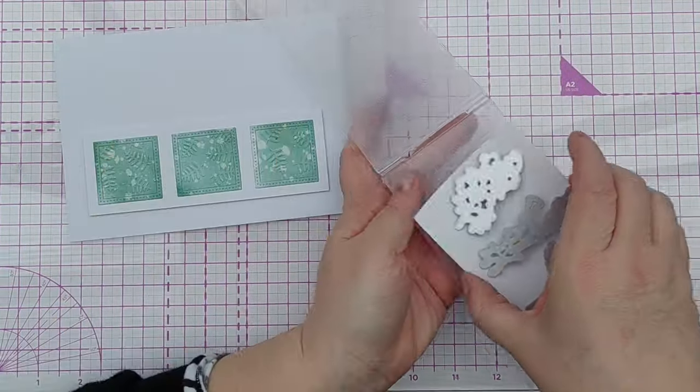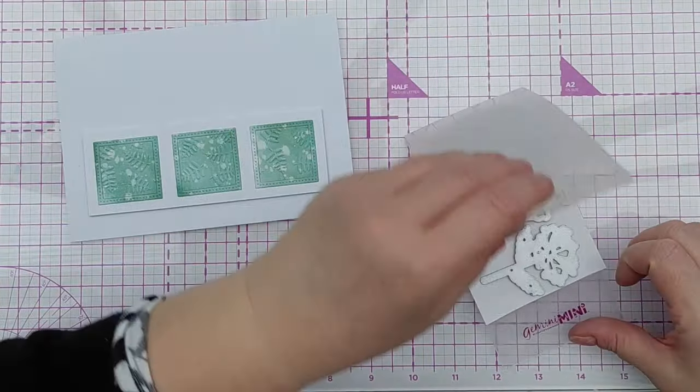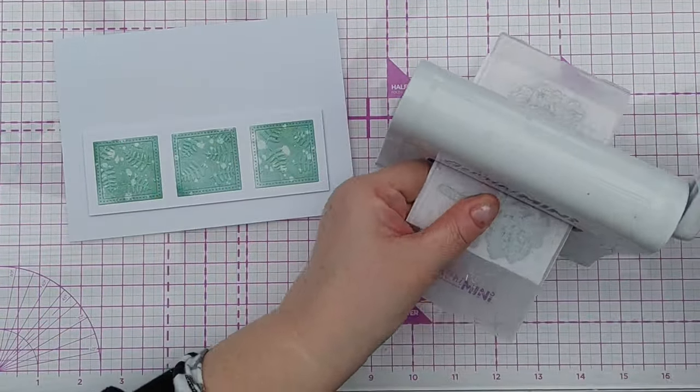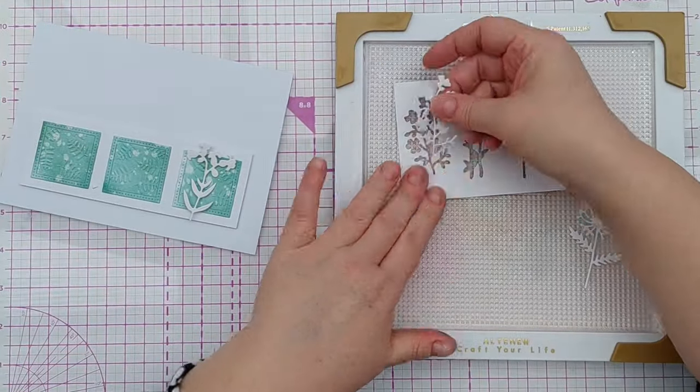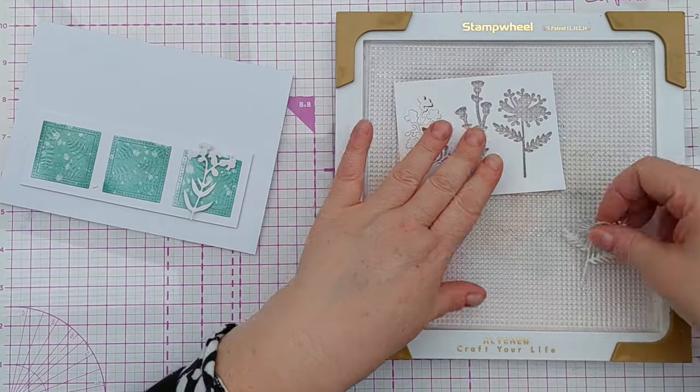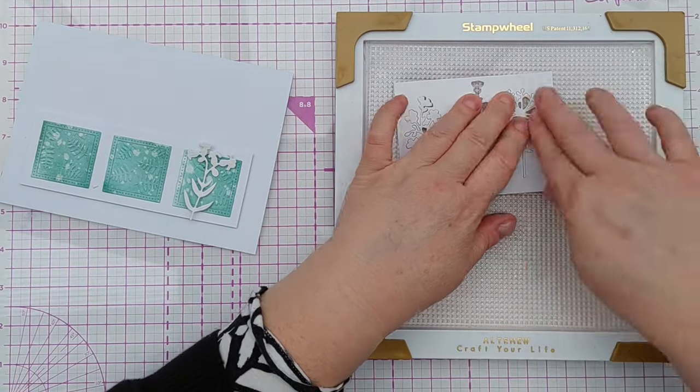To embellish my card I die cut some flowers out of white cardstock and then gave them a light blush of the green inks. I used a grip mat and the bits of card they'd been cut from to help me keep them still while I inked them and to protect them from tearing.